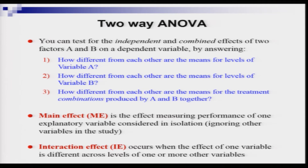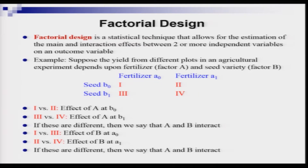Factorial design is a very useful concept in applied research, though it is quite complicated. For this course I want to show you the simplest possible case, which is the 2×2 factorial design. Factorial design is a statistical technique that allows estimation of the main and interaction effects between two or more independent variables on an outcome variable, where the independent variables are qualitative in nature and the outcome variable is typically continuous.